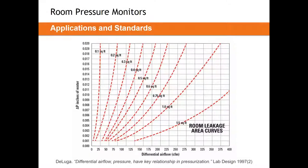Before we get into how to use monitors in these applications, it's important to understand what our role as design engineers actually is. To create room pressure we need to use a differential airflow between supply and exhaust. For example, if you understand the leakage rate of a space at one square foot, you could recreate room pressure of 0.01 inches with about 250 CFM of offset airflow. Our job is not to ensure we maintain a certain pressure differential — that will be the balancing contractor's responsibility.